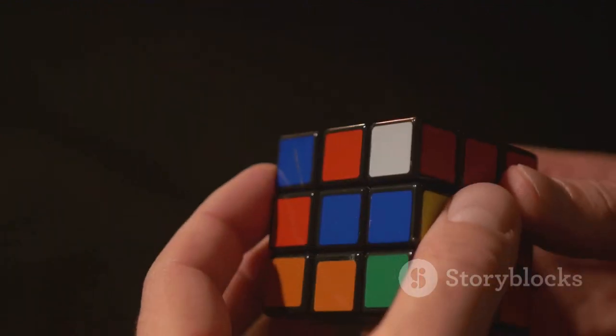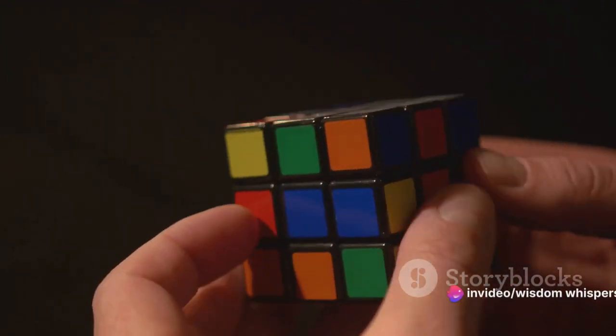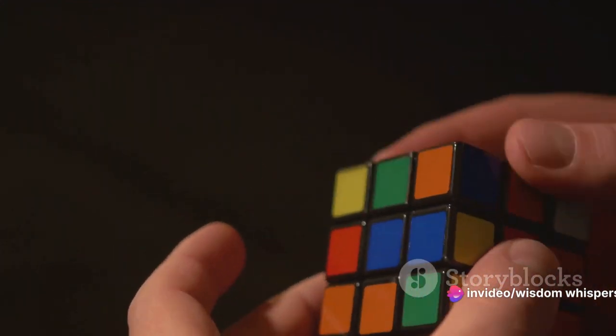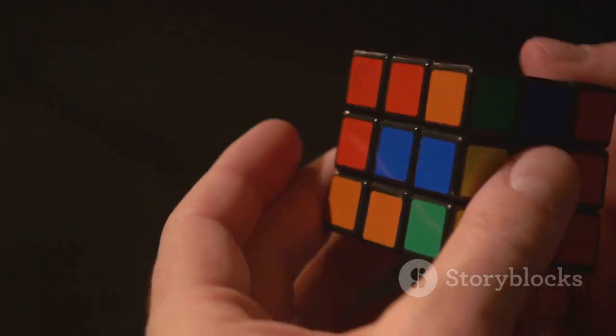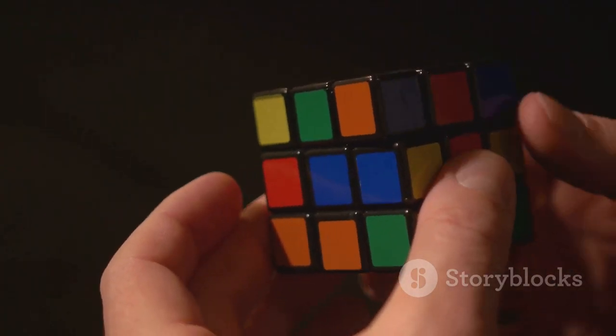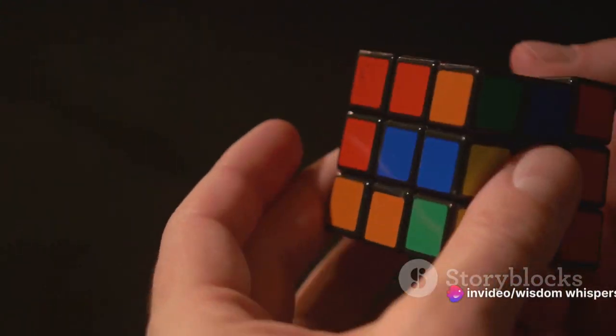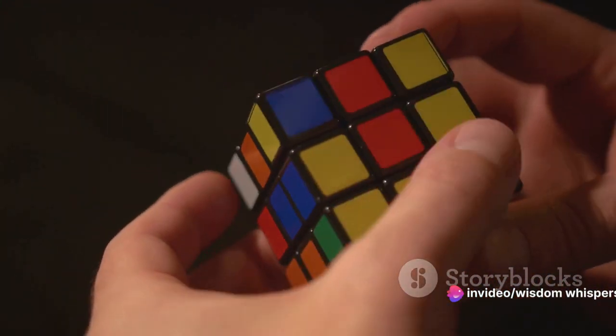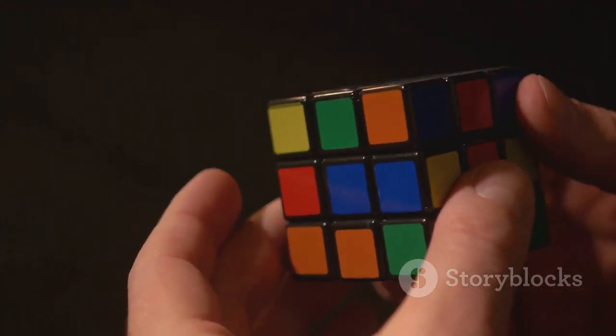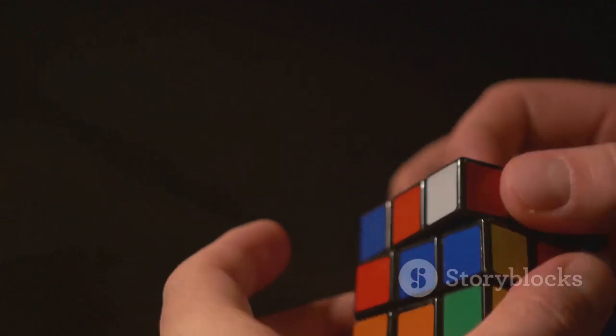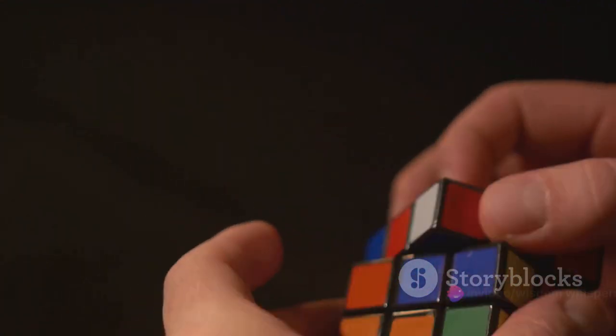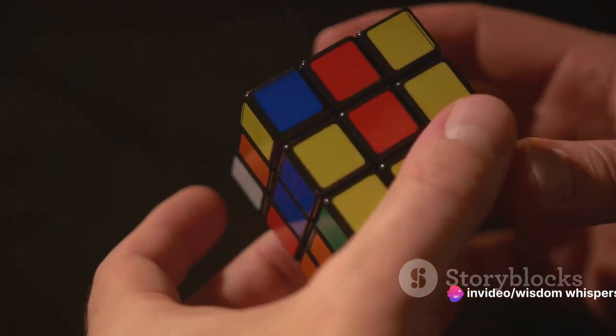Now that you've mastered the first layer, it's time to take on the second. This layer is all about positioning the edge pieces correctly. Let's break it down. Firstly, identify the edge pieces that belong in the second layer. These pieces have two colors on them. One color matches the center color of the second layer and the other color matches the center color of one of the adjacent sides. Next, move these edge pieces to the top layer. This might sound counter-intuitive but trust me, it's a necessary step.